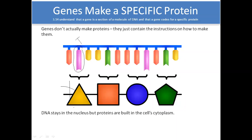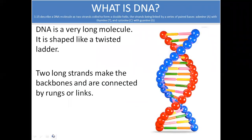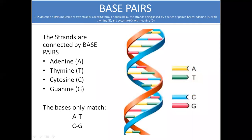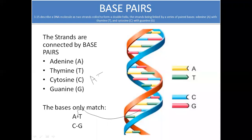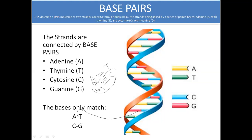DNA stays in the nucleus but protein is built in the cell cytoplasm — translation happens in the cytoplasm while transcription happens in the nucleus. DNA is a double-stranded structure linked by hydrogen bonds. There are four types of nucleotides: adenine, thymine, cytosine, and guanine. Adenine always forms a bond with thymine and cytosine forms a bond with guanine. The bond between A and T is a double hydrogen bond, while G forms a triple hydrogen bond with C. DNA with more G-C content is more stable.